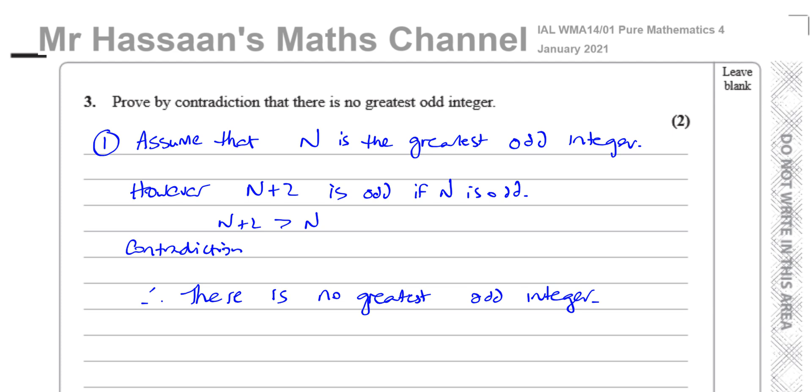So nothing really complicated here. Basically, you assume the opposite. You assume that they say, prove by contradiction that there is no greatest odd integer. So you say, assume that n is the greatest odd integer. So you've called a random number n. And then you show that, of course, you can add 2 to that number. It's going to be odd. Therefore, there is a number which is greater than the one that we assumed was the greatest odd integer.